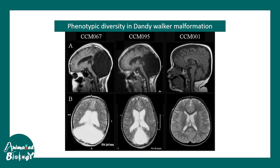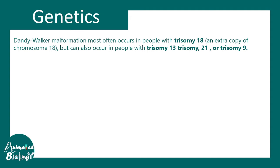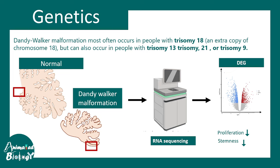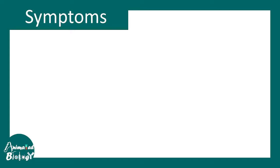Dandy Walker syndrome is pretty much pleiotropic — it shows involvement of different genes and pathways, and phenotypic variability and diversity are quite massive. MRIs from three patients show different degrees of severity. Genetically, trisomy 18, trisomy 13, 21, and 9 are associated with Dandy Walker malformation. RNA sequencing experiments from the rhombic lip of Dandy Walker patients reveal a reduction in proliferation and stemness-related genes, which explains why the rhombic lip is dysmorphic and undergoes atrophy.